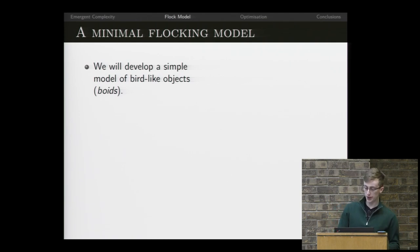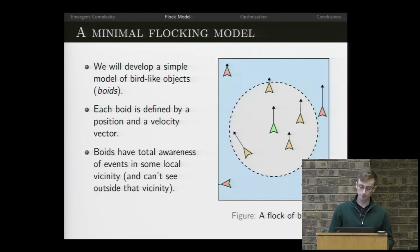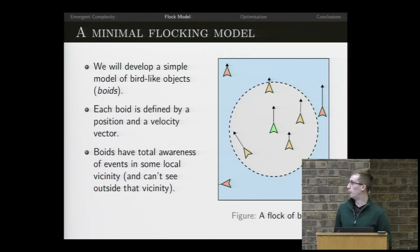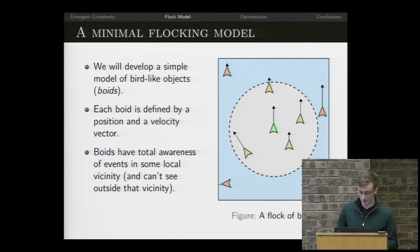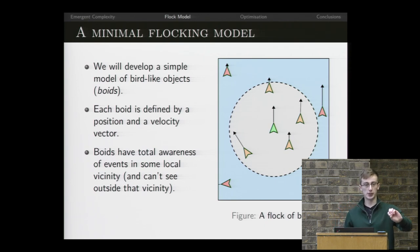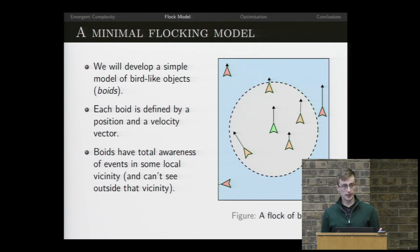We're going to use a really simple model. Each bird is defined by its position and its velocity. Each bird has total awareness of everything happening around it within some sphere, but it can see absolutely nothing outside that sphere — these are sometimes called boids in the literature. The simulation works as follows: at each time step, each bird moves by an amount corresponding to its velocity vector, then looks around in the sphere, and considers changing its velocity vector. Then we carry on evolving time steps and we have a simulation.